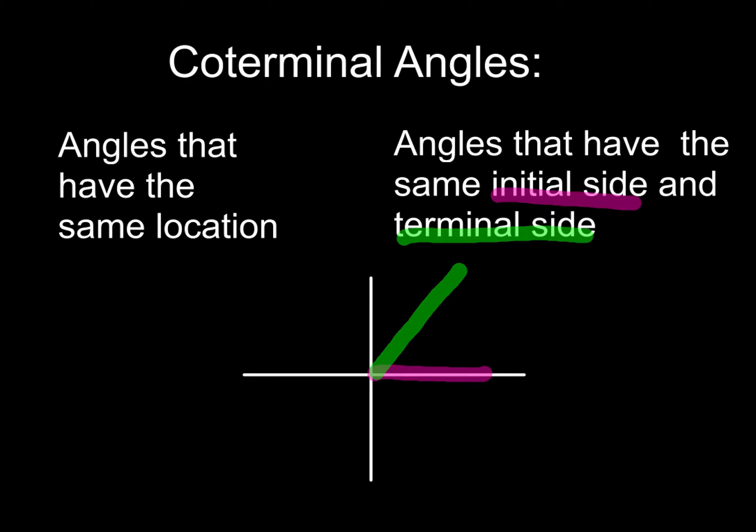Now first, we've got to figure out what coterminal angles are. We've got to define them. So coterminal angles, the way I think about them, they're just angles that have the same location. They're angles that have the same initial side and the same terminal side.